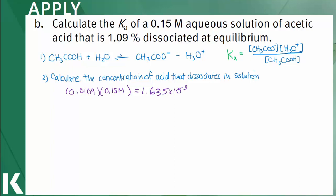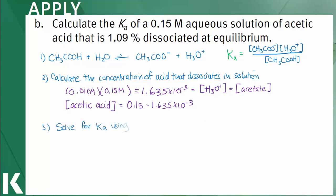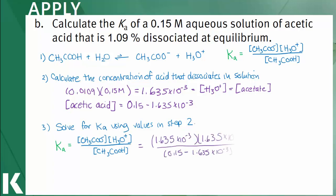Since 1.635 × 10⁻³ is how much dissociates, that represents the concentration of both the hydronium ion and the acetate ion, because for every one molecule of acetic acid we dissociate, we form one molecule of acetate and one molecule of the hydronium ion. The concentration of acetic acid remaining after dissociation will be 0.15 − 1.635 × 10⁻³. Plugging those values into the Ka expression gives 1.635 × 10⁻³ for hydronium, 1.635 × 10⁻³ for acetate, and 0.15 − 1.635 × 10⁻³ for acetic acid, yielding a Ka of 1.8 × 10⁻⁵, which represents the distribution of hydronium and acetate anions relative to acetic acid at equilibrium.